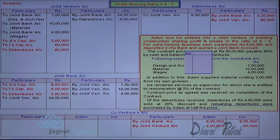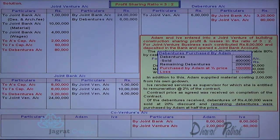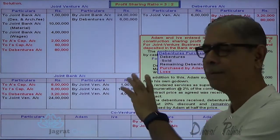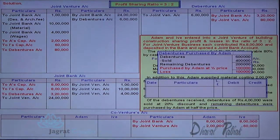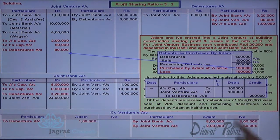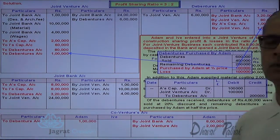The remaining debentures are 2 lakhs. Out of 6 lakhs, 4 lakhs are sold, leaving 2 lakhs. These are taken by Adam at 50% — half the price — so 1 lakh is the exchange value, and loss is 1 lakh. Adam is the receiver, debit the receiver. So Adam's account debit; loss on transfer debited to joint venture account. Adam's account debit, joint venture account debit to debentures account credit. Adam's account is debited with 1 lakh, debentures account is credited with 1 lakh, and loss on transfer is debited to joint venture account. By this transaction, debenture account gets closed.